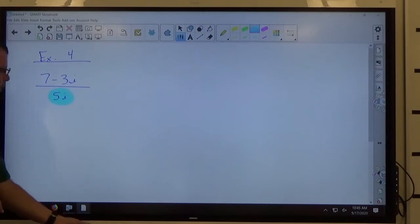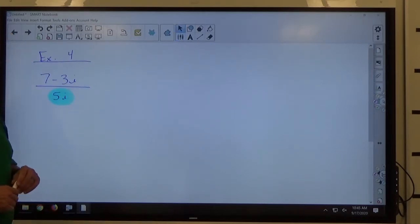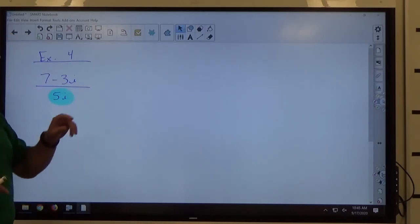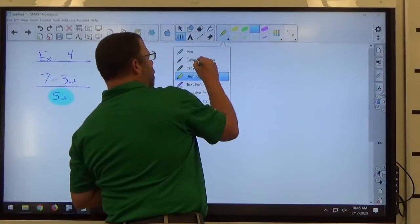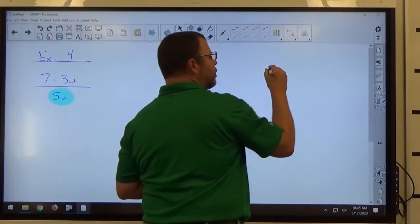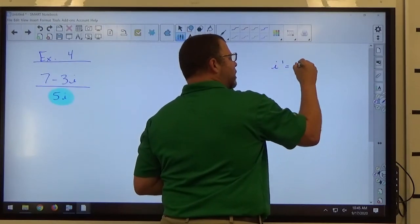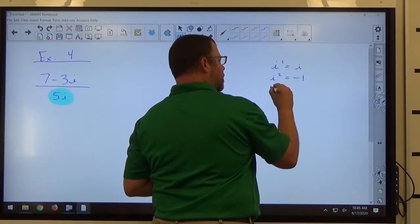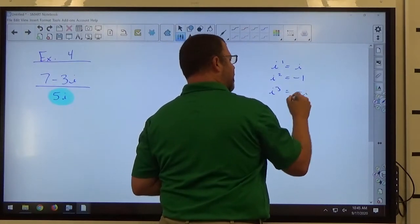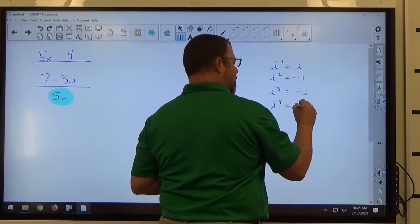The first rule of mathematics we're going to be using is the powers of i that we talked about a few days ago. So i to the first power is i, i to the second power is negative 1, i to the third power is negative i, and i to the fourth power is positive 1.